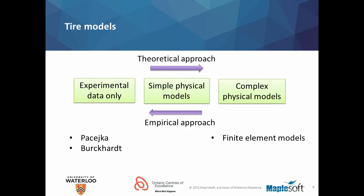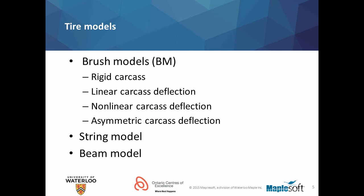In between these two extremes lie tire models that capture some physical nature of the tires. Depending on various complexities, these tire models can have various features built into them. For example, a brush model has been used in conjunction with rigid carcass model, linear carcass model, non-linear carcass model, and even asymmetrical carcass models to model tires. Similarly, string models and beam models have also been used by many researchers to model the behavior of automotive tires.